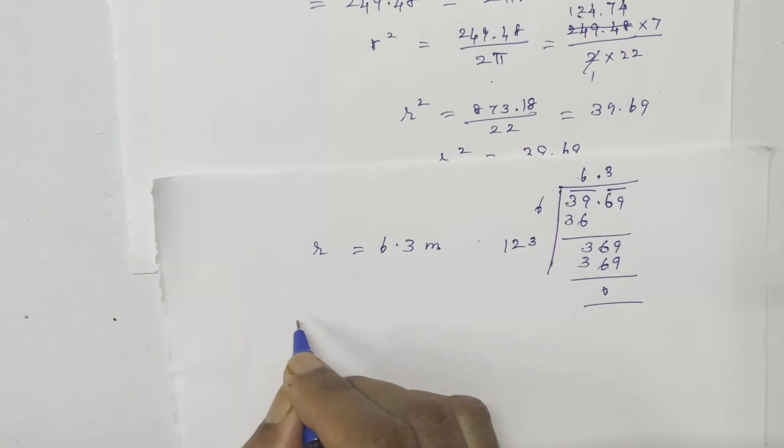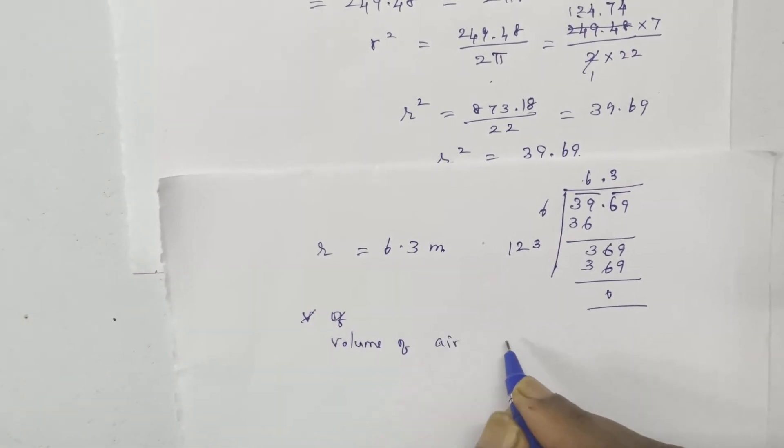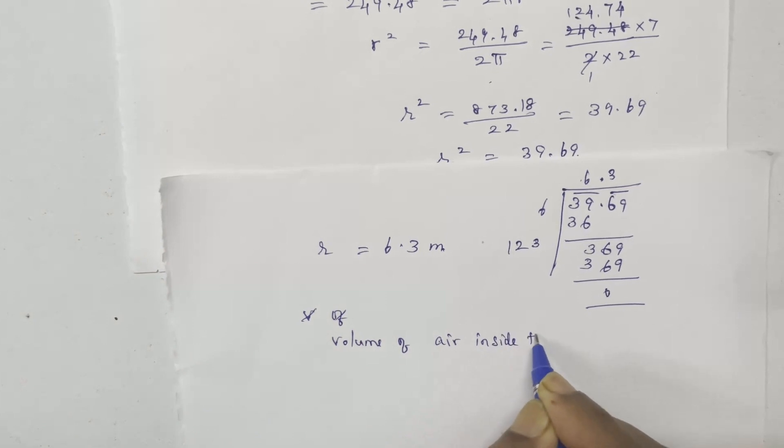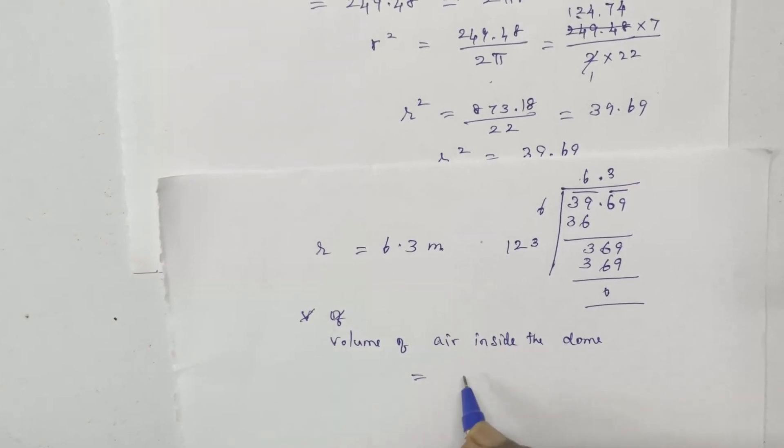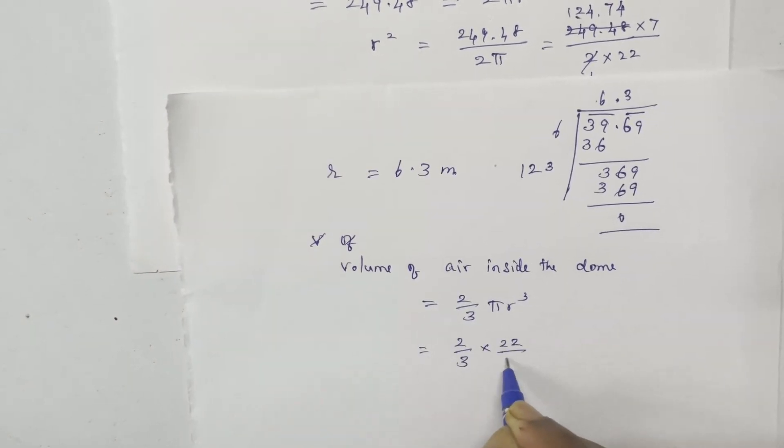Now we calculate the volume of air inside the dome. Volume of hemisphere formula is 2 by 3 pi r cube, where radius is 6.3.